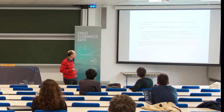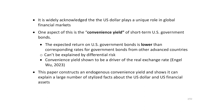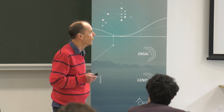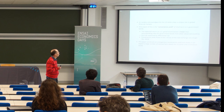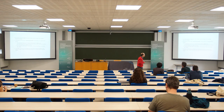It's widely acknowledged that the US dollar plays a really big role in global financial markets. One aspect we're going to focus on is the convenience yield. We define the convenience yield as the excess expected return on foreign government bonds relative to US government bonds, adjusted for expected changes in the exchange rate. This expected return is positive — or when we flip it, the expected return on US government bonds is negative relative to equivalent foreign government bonds.